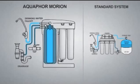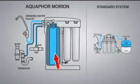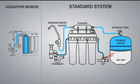The main difference between the Aquaphor Morion and conventional systems is the unique design of Morion's storage tank. Conventional tanks have two sections separated by a flexible wall.